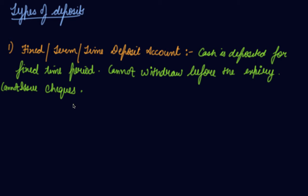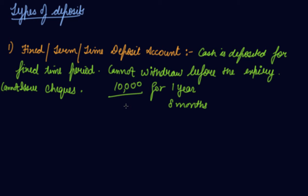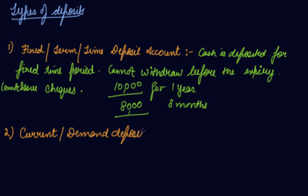If the depositor needs the amount before the expiry of the fixed period, they can withdraw it after paying a discount or penalty to the bank. For example, if you deposit 10,000 in the bank for one year but need the money after eight months, the bank will discount the amount — say, paying you only 8,000 and keeping 2,000 as a penalty.